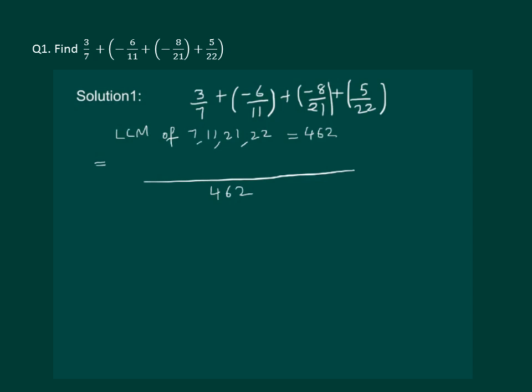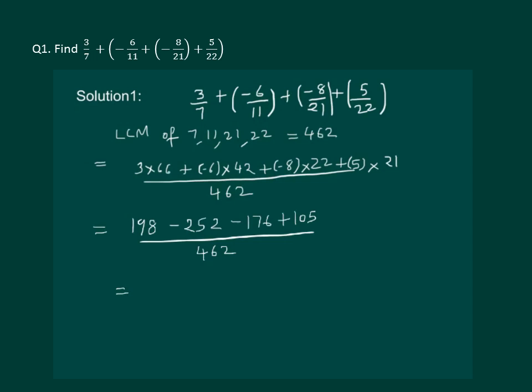Our LCM is 462. We get 3×66 plus (-6)×42 plus (-8)×22 plus 5×21. Let us solve this further. We get 198 - 252 - 176 + 105 whole divided by 462, which is equal to -125/462. And which is the required answer.